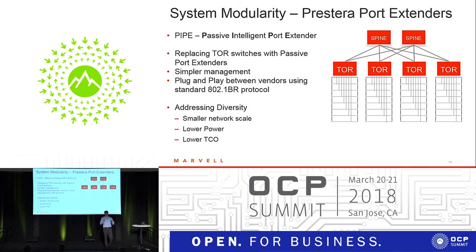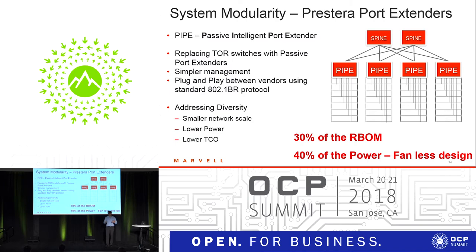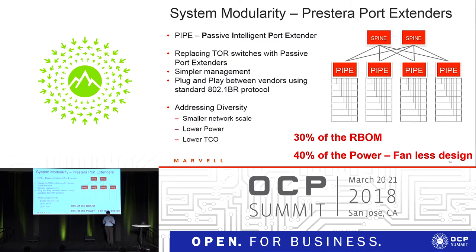The modularity doesn't stop inside the chip — it also extends to the system level. We showed at the last OCP our PIPE technology, which replaces the top-of-rack. PIPE is a passive intelligent port expander that enables simpler management and plug-and-play using the 802.1BR interface. Most importantly, PIPE enables system vendors to reduce power by 30–40% and reduce BOM cost to 30% of a standard top-of-rack. This is a revolution, and customers applying this technology will use these benefits to their advantage. Our modular technology disaggregating the interface from the main switch function is also applied at the system level.